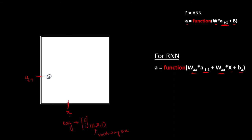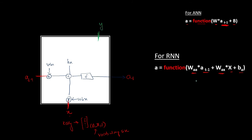So the RNN cell computes: multiply a(t-1) with Waa and x with Wax, add them together with bias ba, and pass through an activation function to produce output a(t). We also have the y output, whose equation multiplies a(t) with weight matrix Wya, adds bias by, and passes through an activation function — either sigmoid or softmax — to produce the predicted output y.